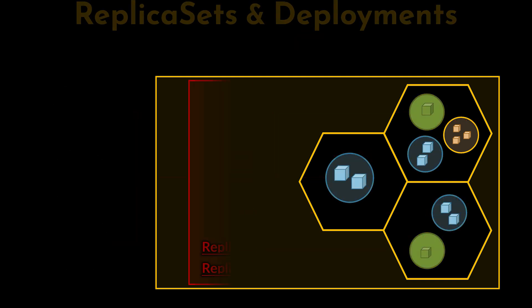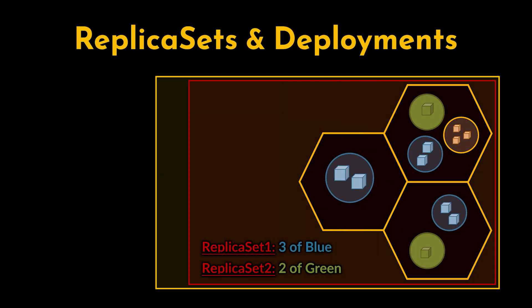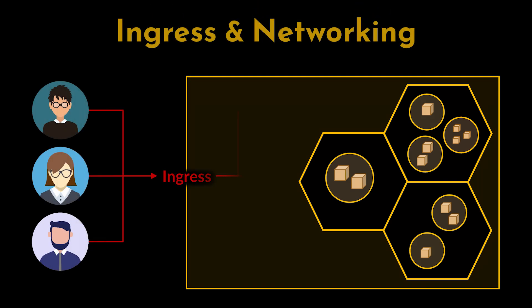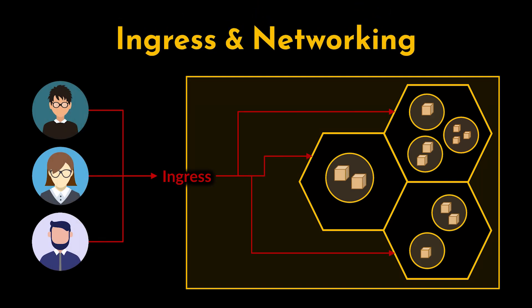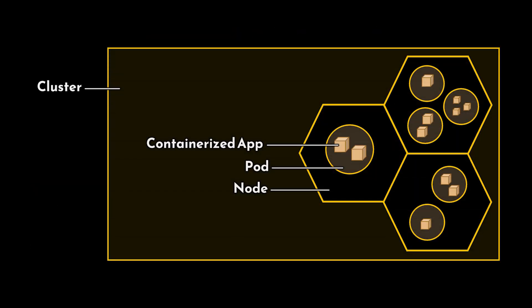This abstraction allows clients to reliably connect to backend pods without needing to know their locations. Next, deployments and replica sets: a replica set ensures that the specified number of replicas of an application are running at any given time across the entire cluster. A deployment provides declarative updates to applications and manages the creation and maintenance of replica sets. Finally, ingress and networking: ingress is an API object that manages external access to services within a Kubernetes cluster, typically HTTP and HTTPS. Ingress can provide load balancing, SSL termination, and name-based virtual hosting.